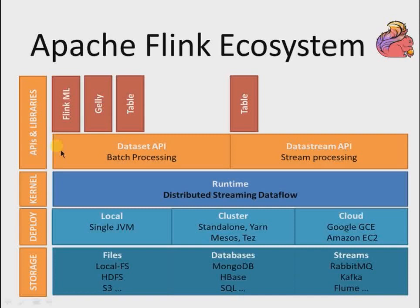The second API is the DataStream API. It handles transformations on a continuous stream of data to process live data estimates, and provides various operations like filtering, updating state, windowing, and more. Best practices for the DataStream API include using the print command to print the data stream, or using env.fromElements or env.fromCollection to get a data stream and start working on it.